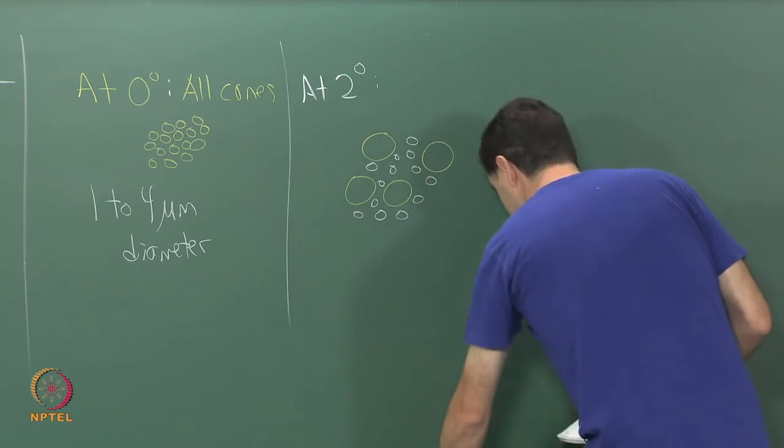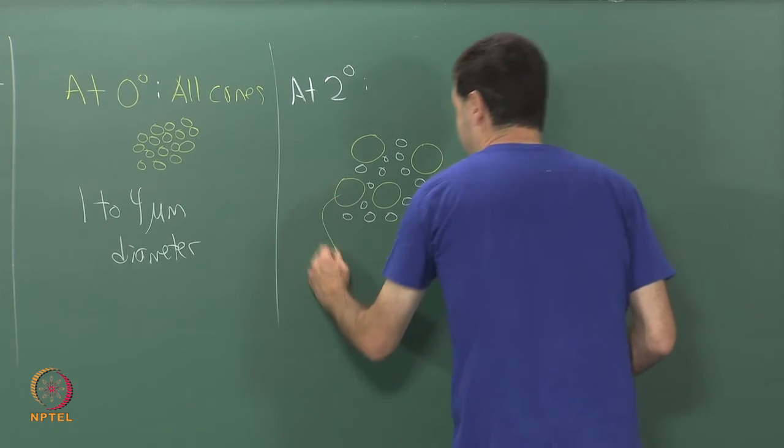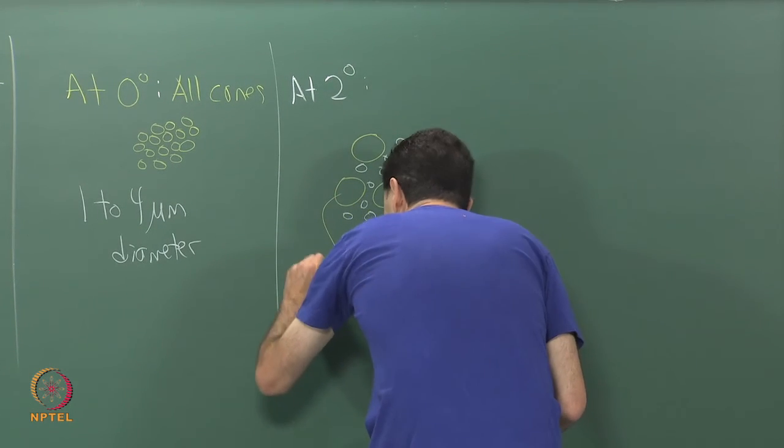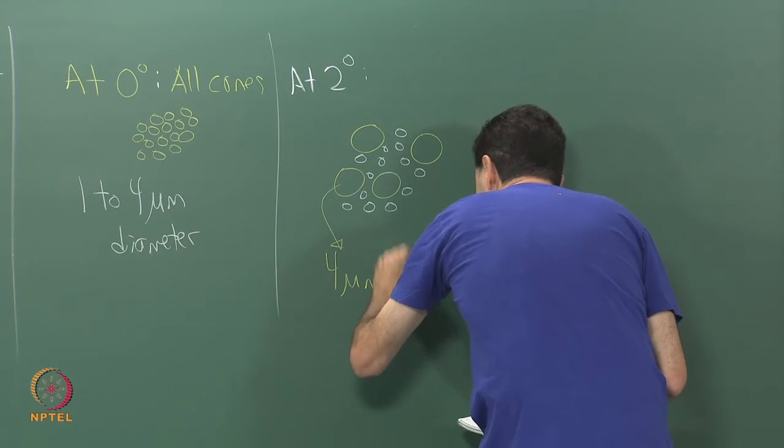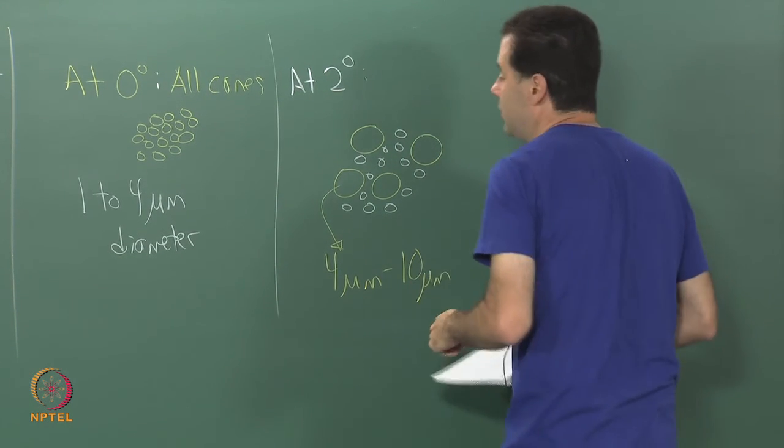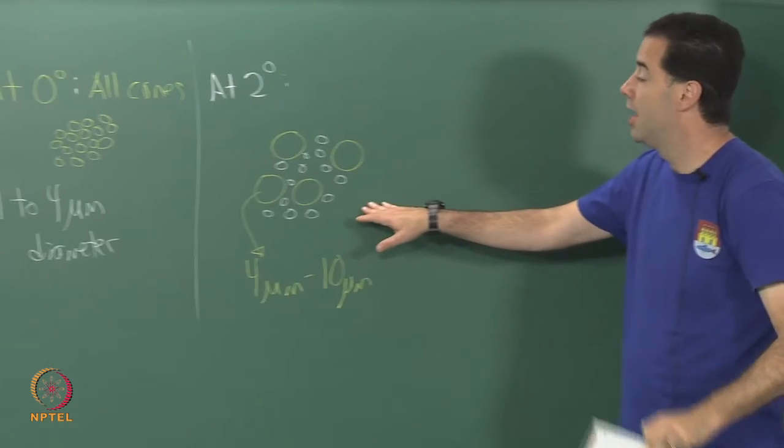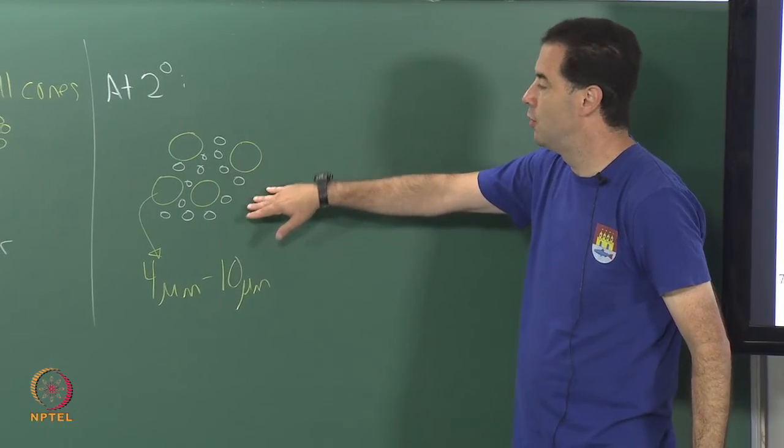The cones are in the 4 micrometer to 10 micrometer range, whereas the rods are down to 1 micrometer. They are small like the cones were, and the cones are now getting larger and loosely interspersed with a lot of tightly packed rods.